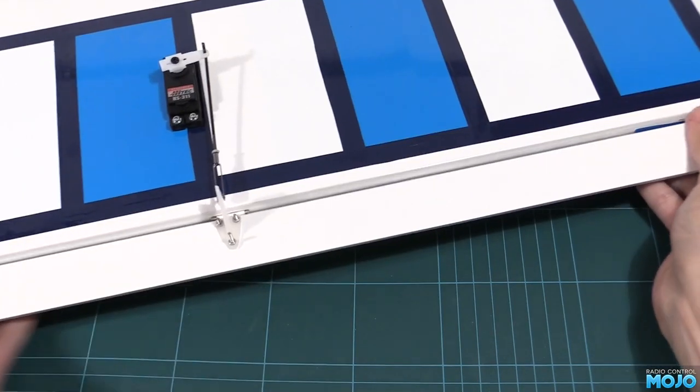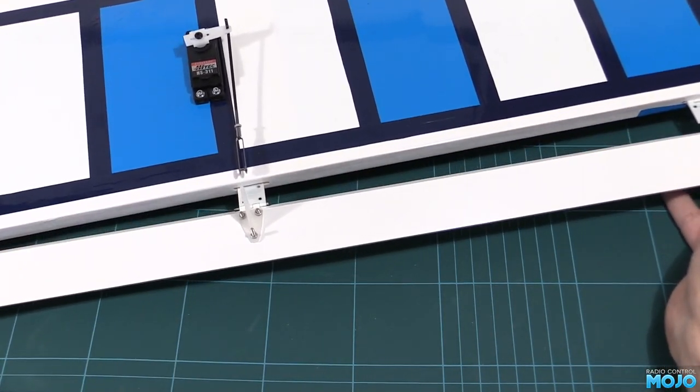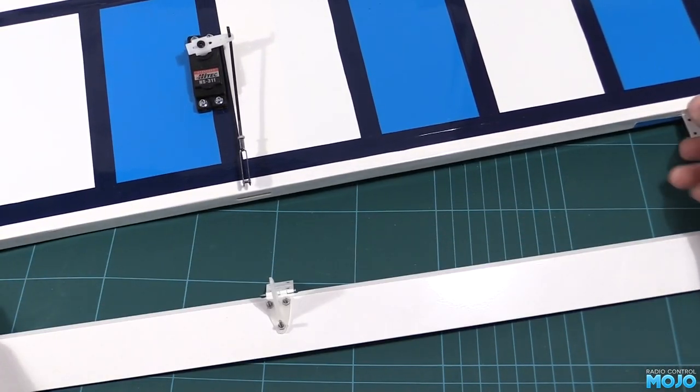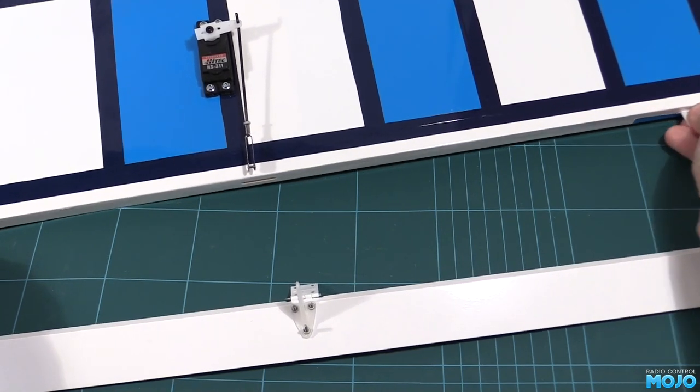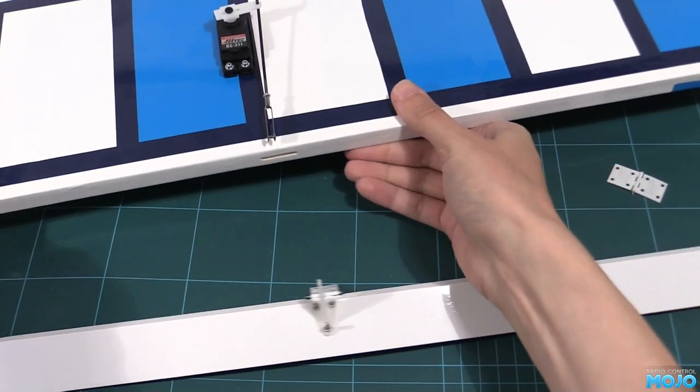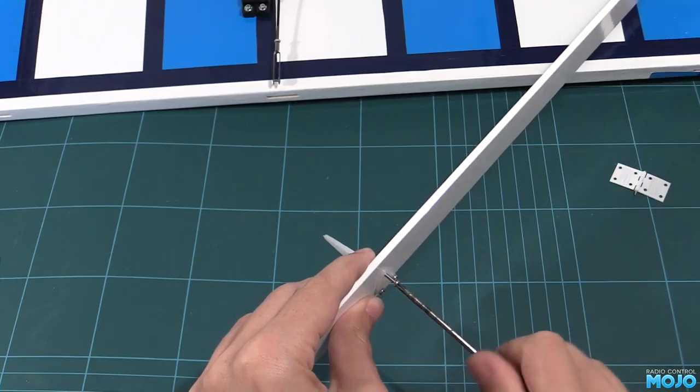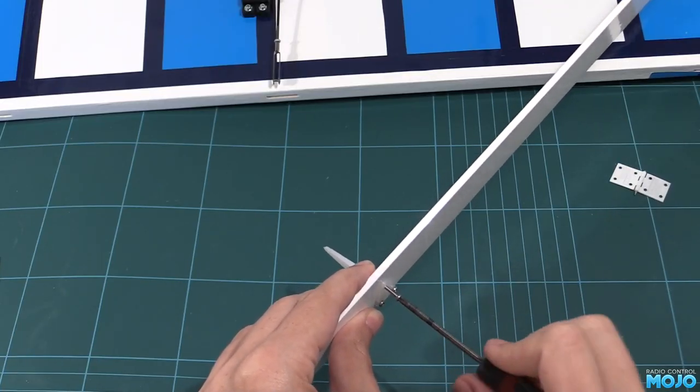Well, we've come this far with the wings, so we might as well finish the job. Earlier in the build we looked at fitting the hinges to the tail, so I won't go into too much detail here. We did the dry build a few videos ago, so all we need to do is remove the hinges and the ailerons and wings. Because we fitted the horn directly over one of the hinges, it's going to have to come off too.